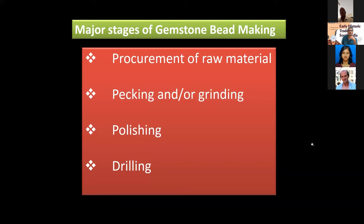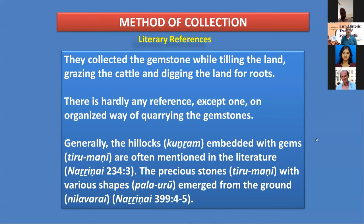How gemstones were collected and exported to different parts of the world: the raw material was available in the nearby area, and pecking, grinding, polishing, and drilling took place as the final stage, producing excellent beads, particularly in and around the Kangayam region of the Coimbatore area. The method of collection is clearly mentioned in Sangam literature — the Natrini mentions hillocks embedded with gemstone zones. From the literature we could identify which area was being described, and when we explored that area, we collected the same gemstones.